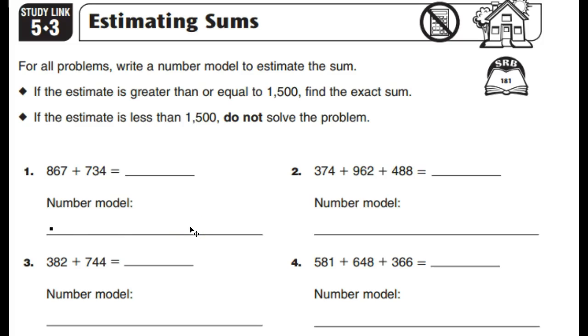So, 867 is, let's see, 900 would round up to. Then I would say plus 734 could round down to 700. And that would equal 1,600.